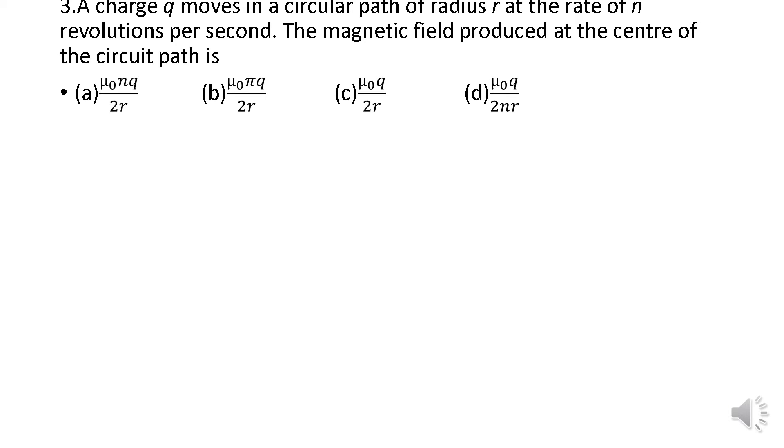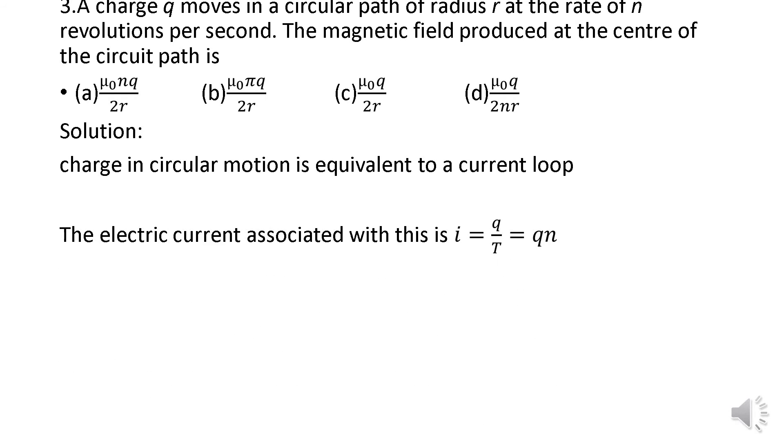What is the solution? A charge in circular motion is equivalent to a current loop. The electric current associated with this is charge divided by time, or q/t. Since 1/t equals n, we can see option d is wrong because n will not be in the denominator - it will come in the numerator.